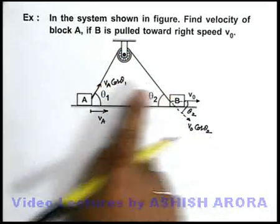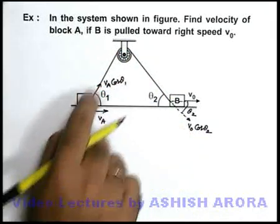So as the total length of string is constant, the two velocity components which are along the length of the string have to be equal.